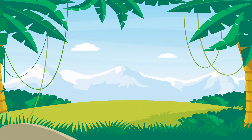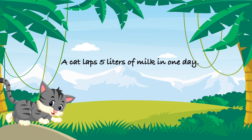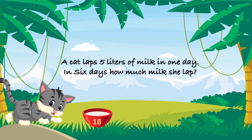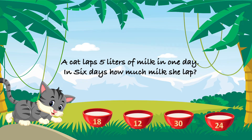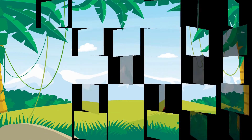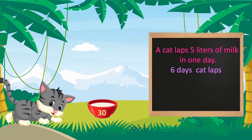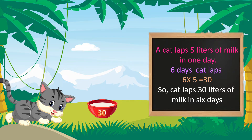Do you know what this question is on? A cat. Let's see a question. A cat laps 5 litres of milk in 1 day. In 6 days, how much milk does she lap? The options are 18, 12, 13 and 24. Your time starts now. Time is up. The correct answer is 30. A cat laps 5 litres in 1 day, so in 6 days the cat laps 6 into 5 equals 30. So the cat laps 30 litres of milk in 6 days.